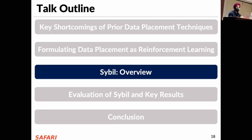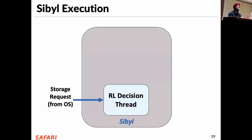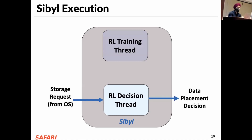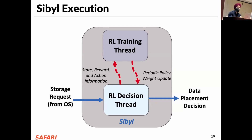We now provide a brief overview and design of Sybil, starting with the execution model. We implement Sybil in the host OS, where for every storage request Sybil uses an RL decision thread to make data placement decisions. Sybil uses another thread — the RL training thread — which runs in the background, collecting information about state, action, and reward to train a data placement policy. Periodically we replace the RL decision thread policy with the RL training thread policy. Our two-threaded implementation runs asynchronously, which avoids the training thread interrupting or delaying data placement decisions for incoming requests.